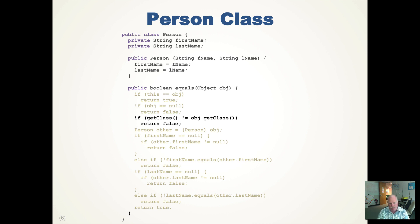And now that we know that they're both the same class, we can cast the object obj into a person and then compare their first names and then their last names. So we can say if their first name is null, if it's not null, return false. If first name is not equal to the other first name, return false.